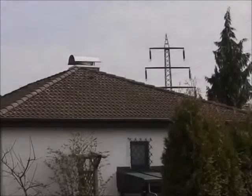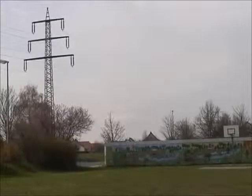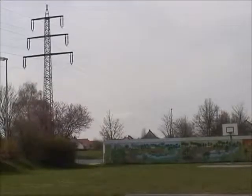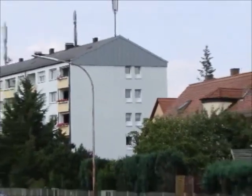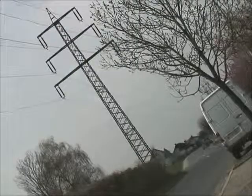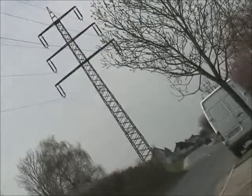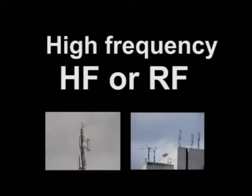Let us start with a few physical basics which we consider essential for a proper measurement of electromagnetic radiation. First of all, the different electrical sources can be divided into two groups: the low frequency, in short LF, and the high frequency, in short HF.